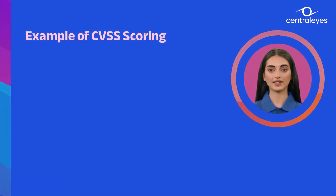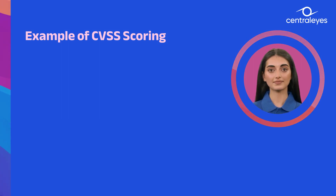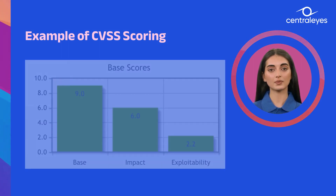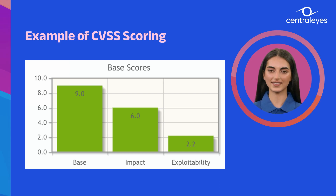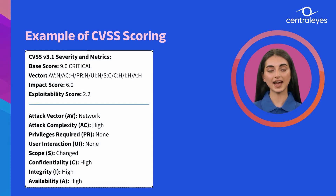Most vulnerabilities will thankfully not reach a perfect score of 10, but let's take a look at an infamous vulnerability that did sadly reach great heights in its CVSS score, with a base score of 9. See how the vector is broken down based on the affecting variables.